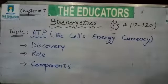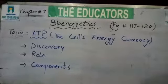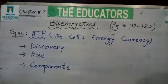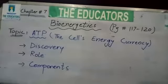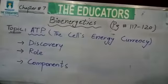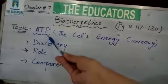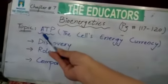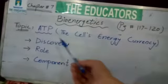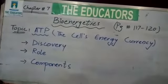According to your lesson plan, today we will start our chapter number 7, that is bioenergetics. I am going to teach you the topic ATP — adenosine triphosphate — the cell's energy currency.